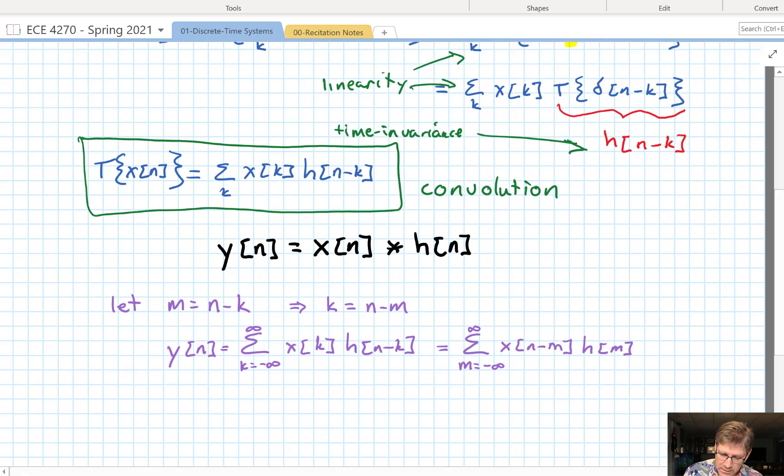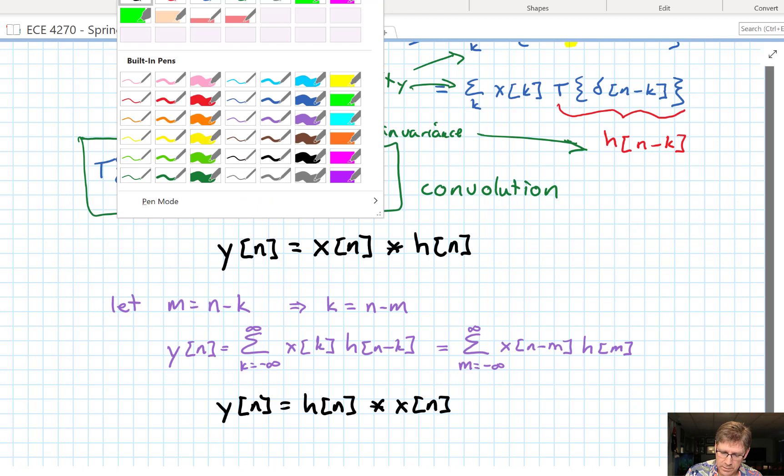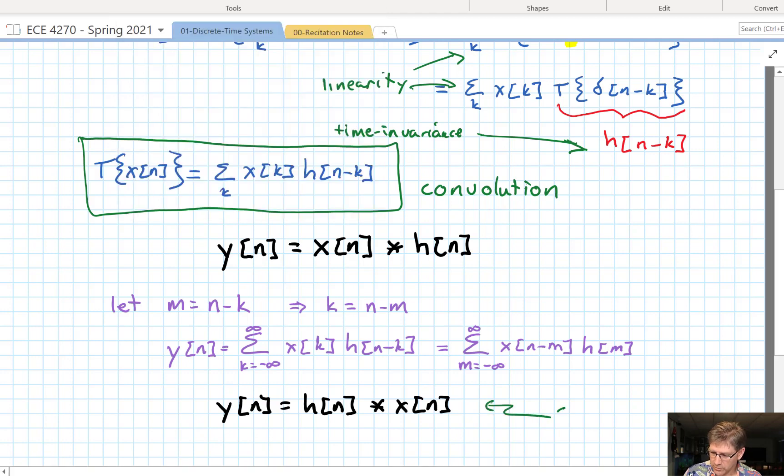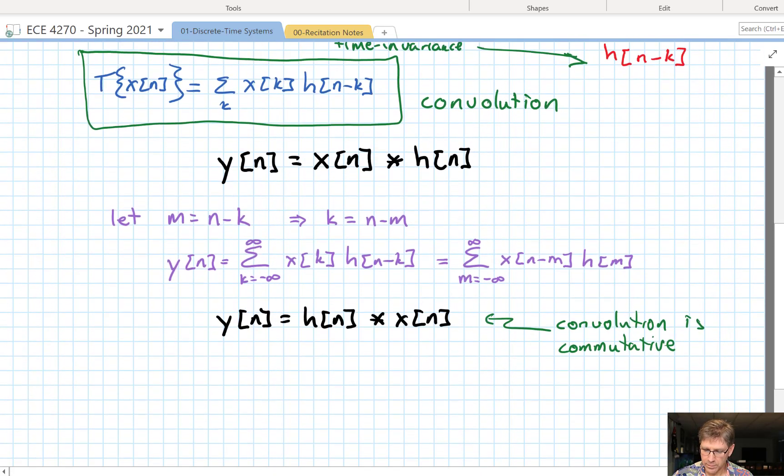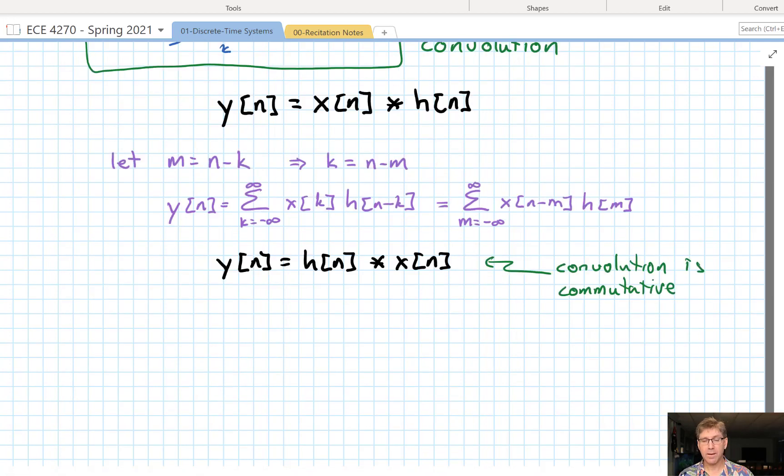So, that shows us that, also, y of n is equal to h of n convolved with x of n. In other words, convolution is commutative. So, there, we've got convolution down.